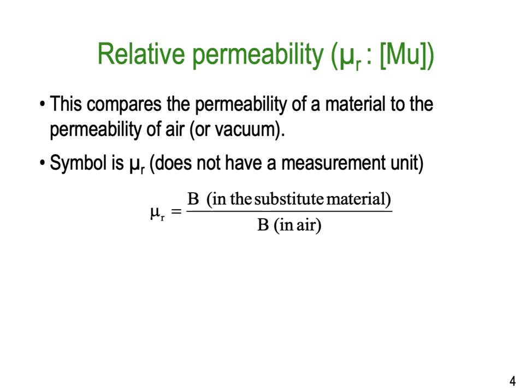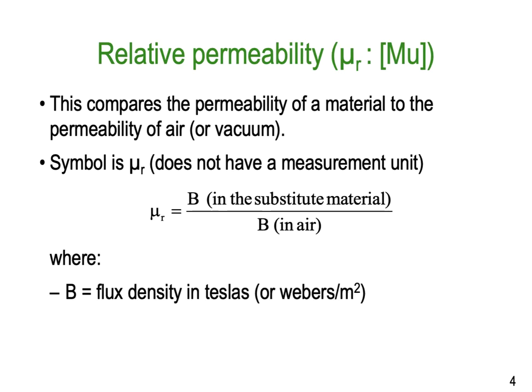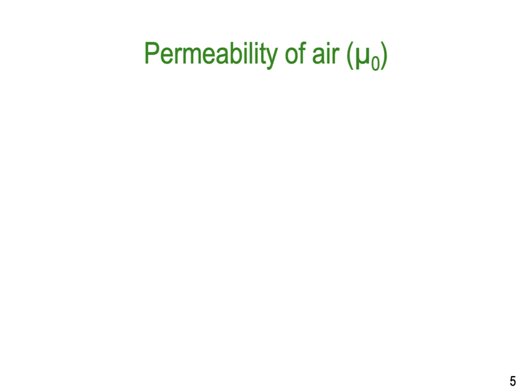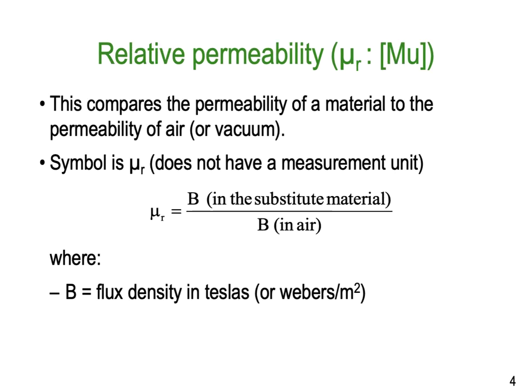B is the flux density — remember, B is in Teslas, or in Webers per metre squared. The B is simply the flux density of the material divided by the flux density of that particular flux in air. Those two ratios together give us the mu relative, relative to air or a vacuum in particular.